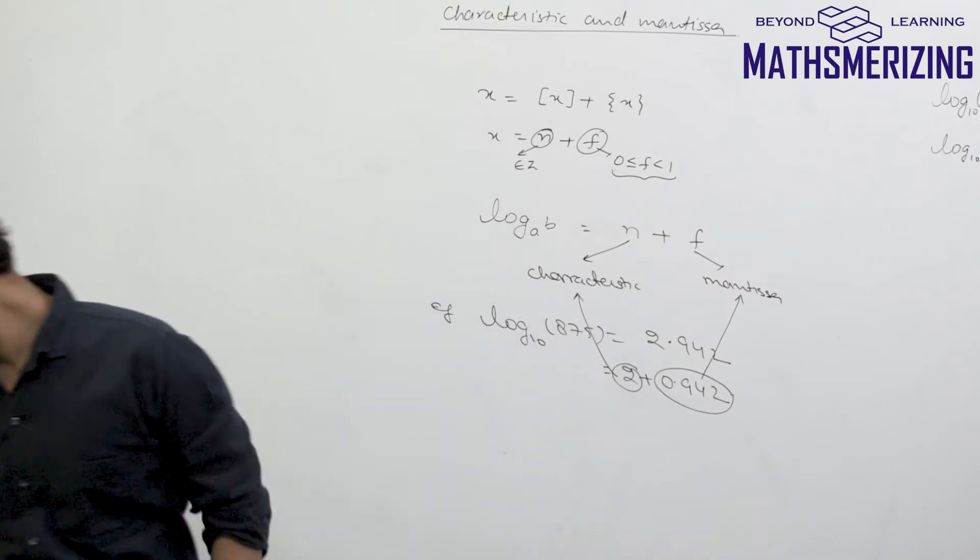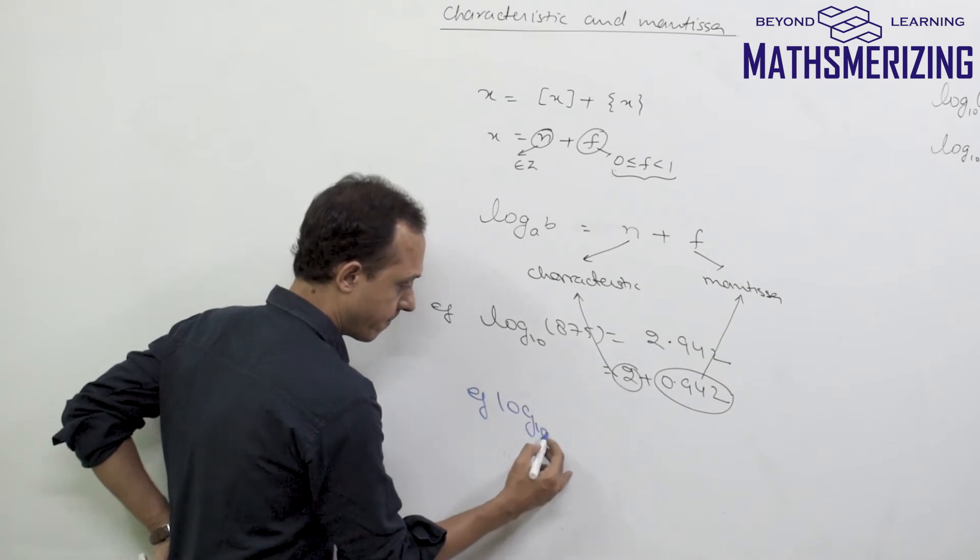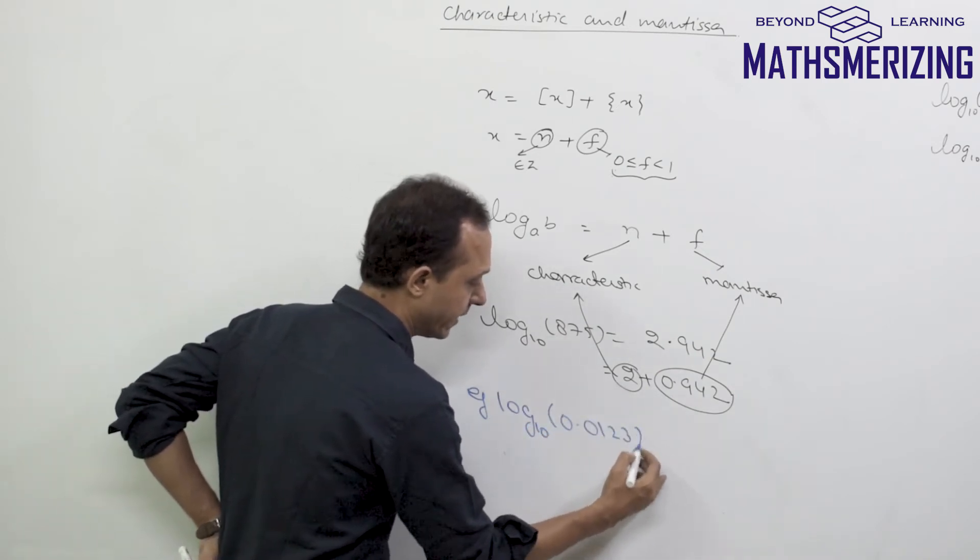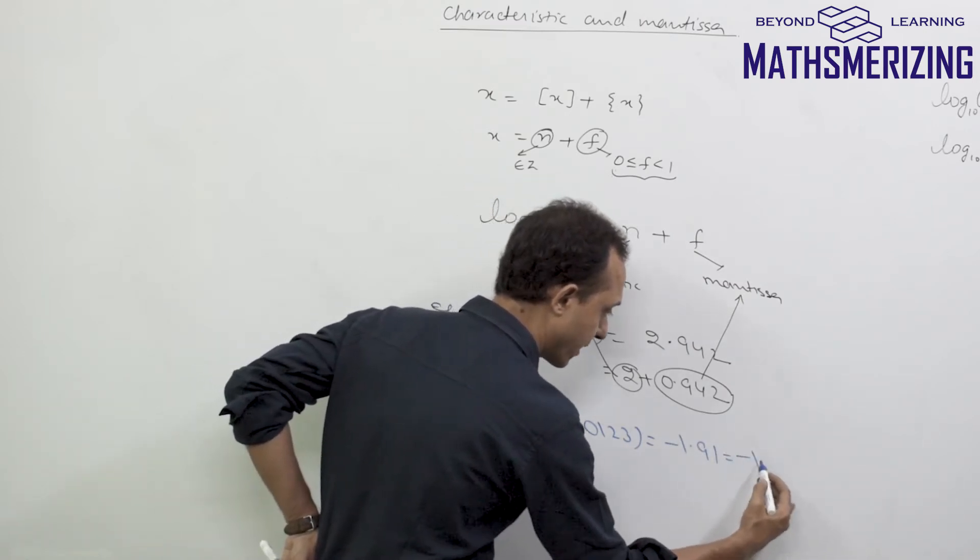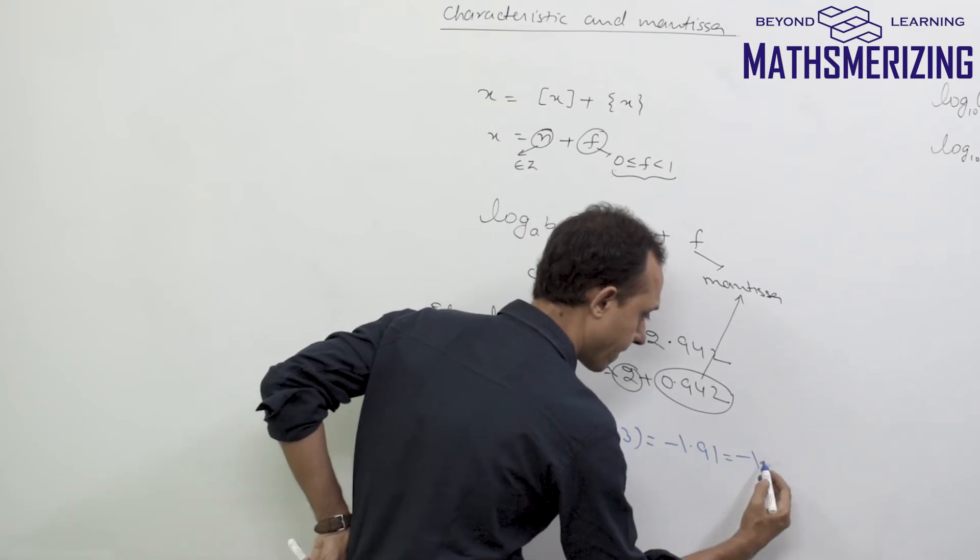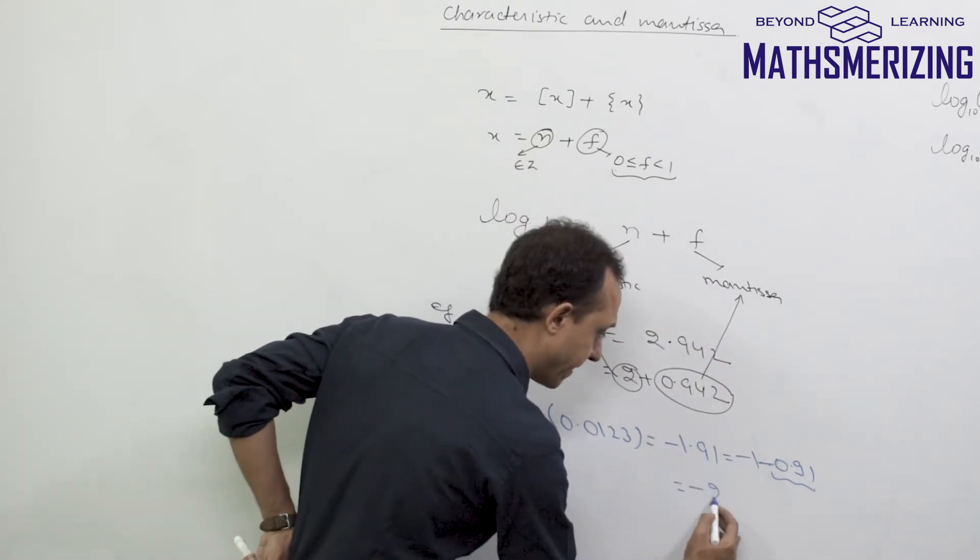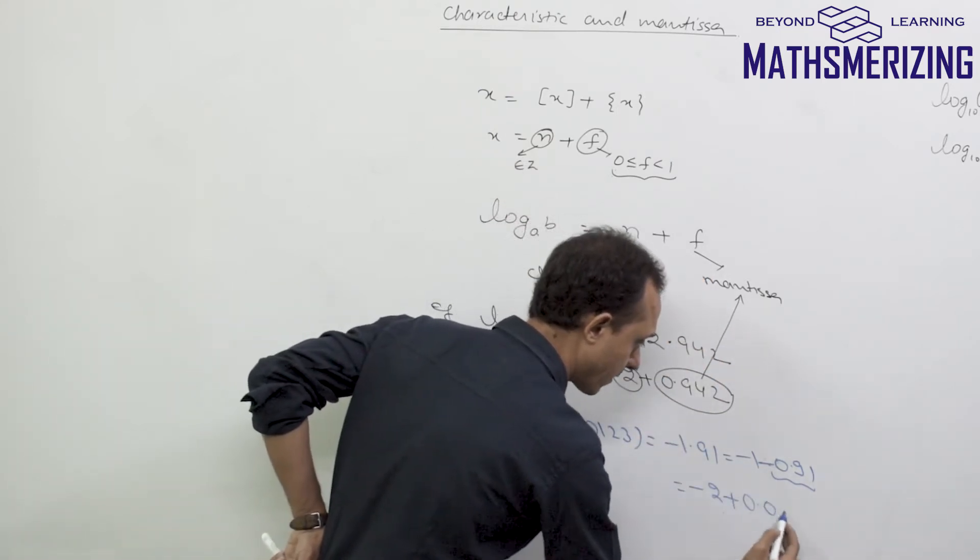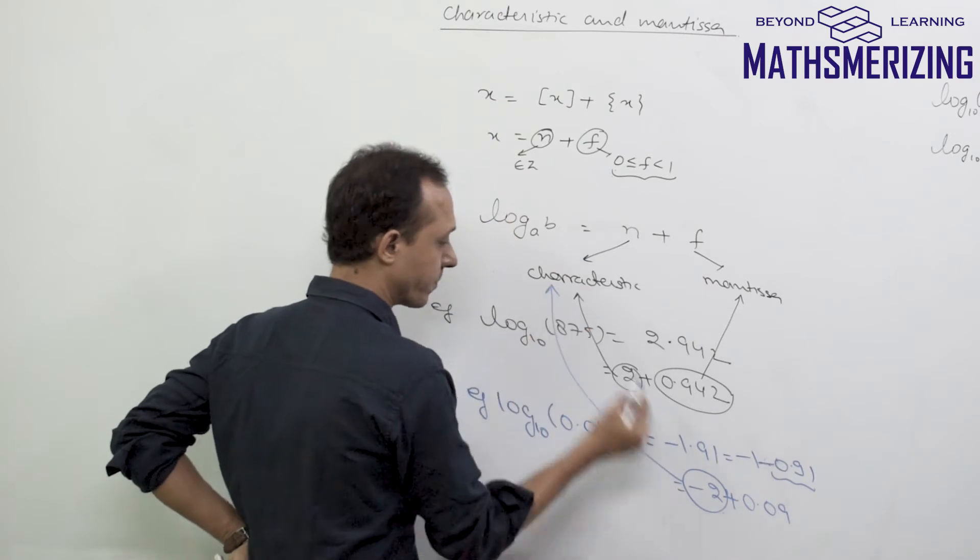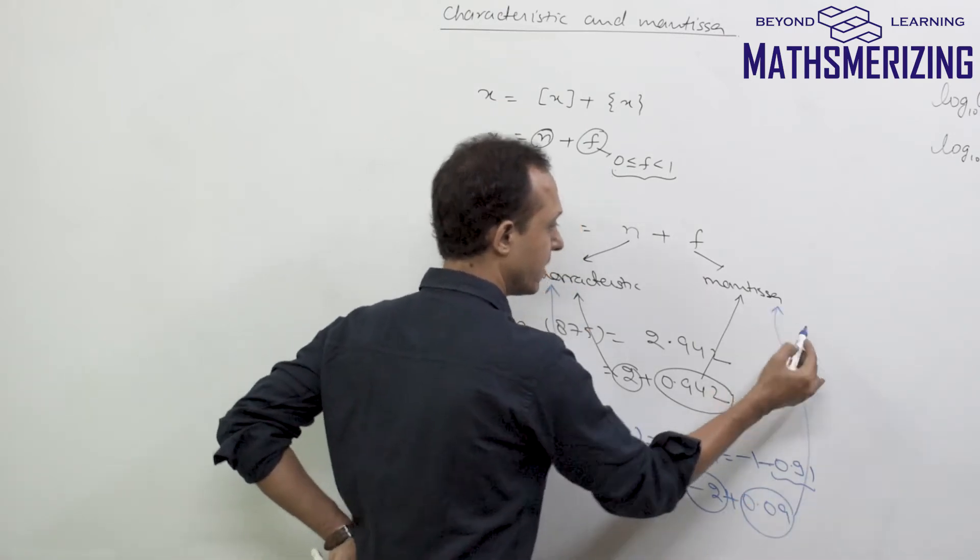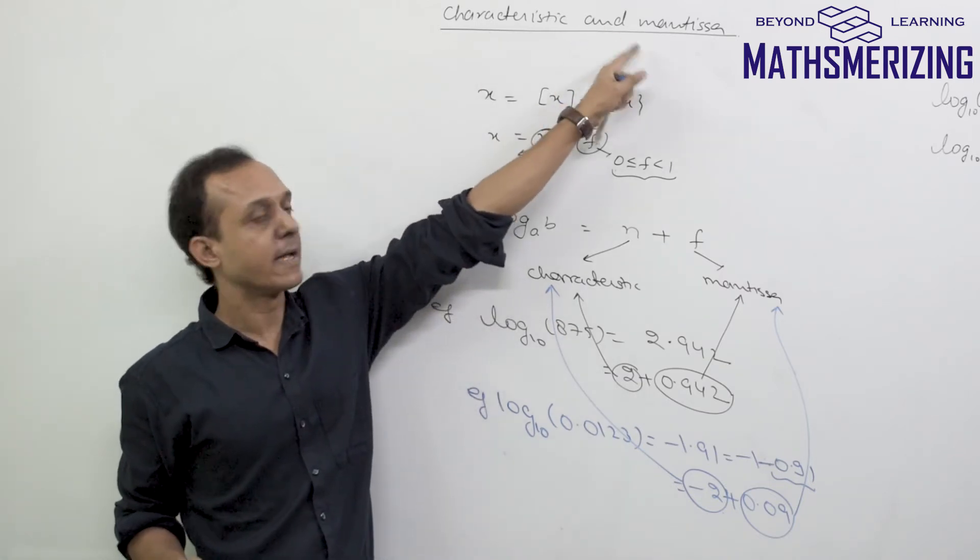Now, for example, if I take log 0.123, you'll get this value as minus 1.91. So I can write it as minus 1 minus 0.91, but the fractional part should be positive, so I can write it as minus 2 plus 0.09. Now in this case, characteristic is minus 2 and mantissa is 0.09. There will be many questions based on characteristic and mantissa.